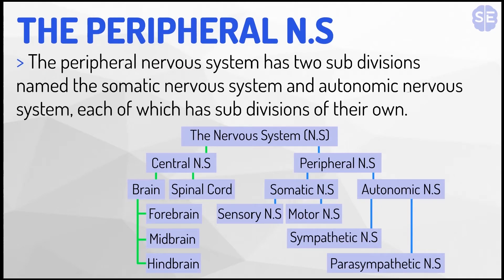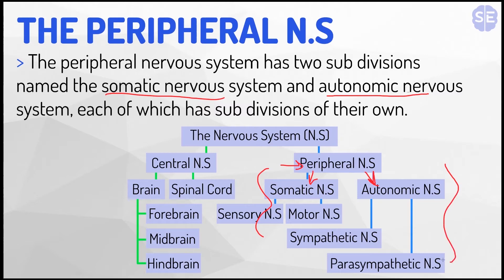The peripheral nervous system has two subdivisions named the somatic nervous system and the autonomic nervous system, each of which have subdivisions of their own. And you can see here, so the peripheral nervous system splits into the somatic nervous system and the autonomic nervous system. These divisions are explained in other videos on this channel.